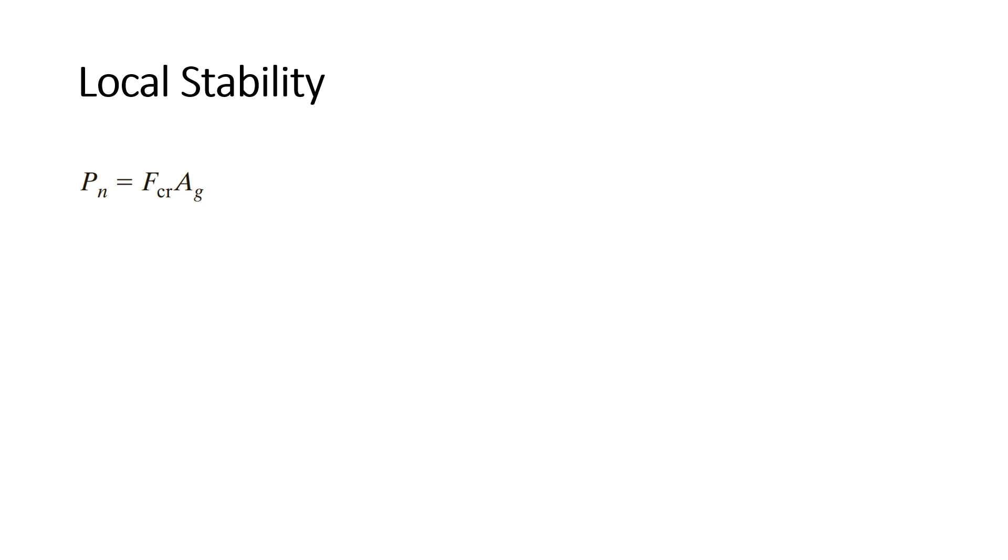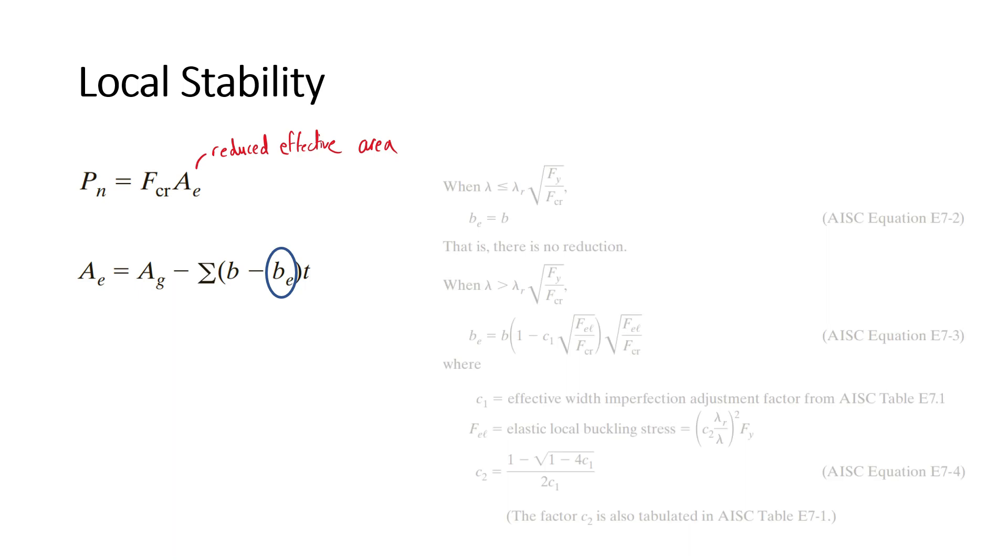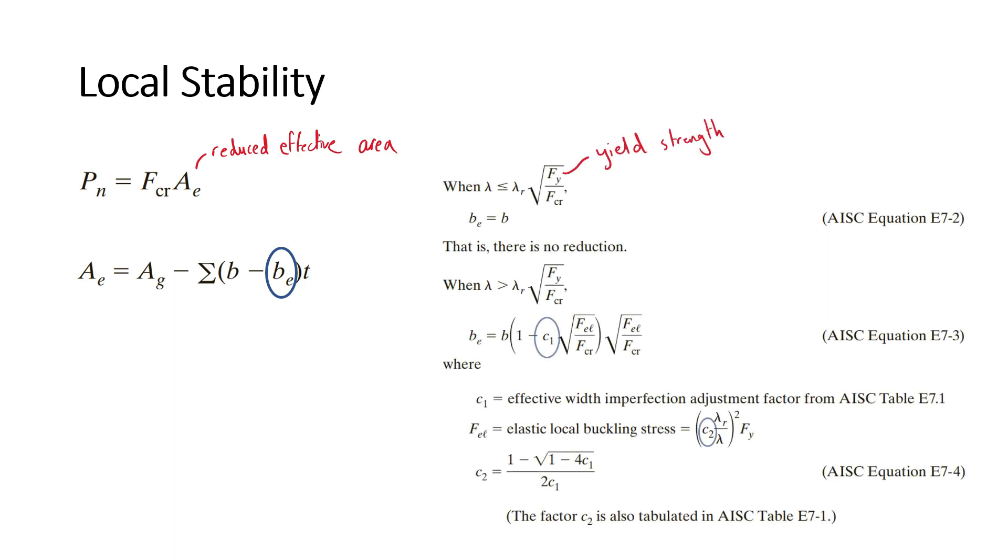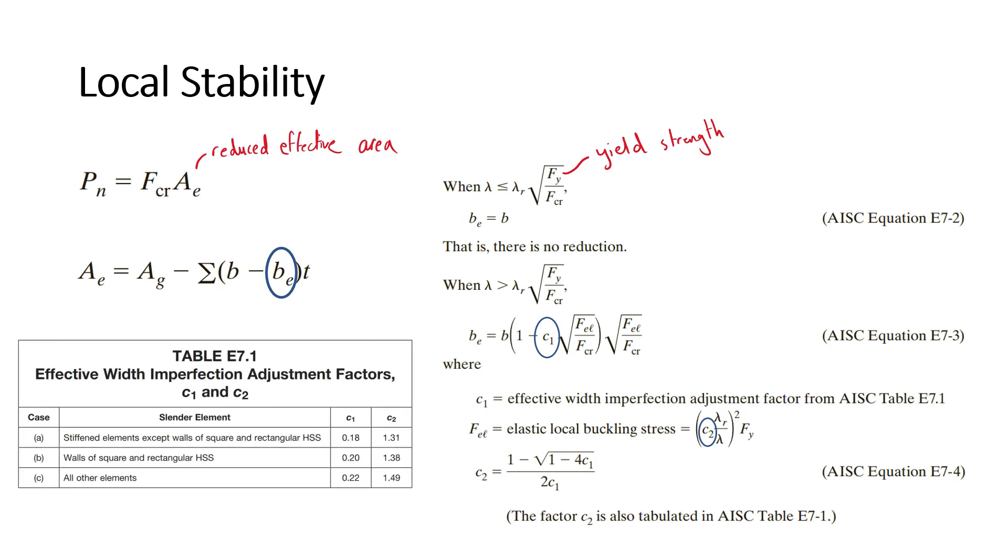This is done by reducing the gross cross-sectional area A sub g to the effective area A sub e, where A sub e is the following. The effective width B sub e is found by using the following equations, where Fy is the yield strength and C1 and C2 are effective width imperfection adjustment factors. Those can be determined from table E 7.1 from the AISC specifications.